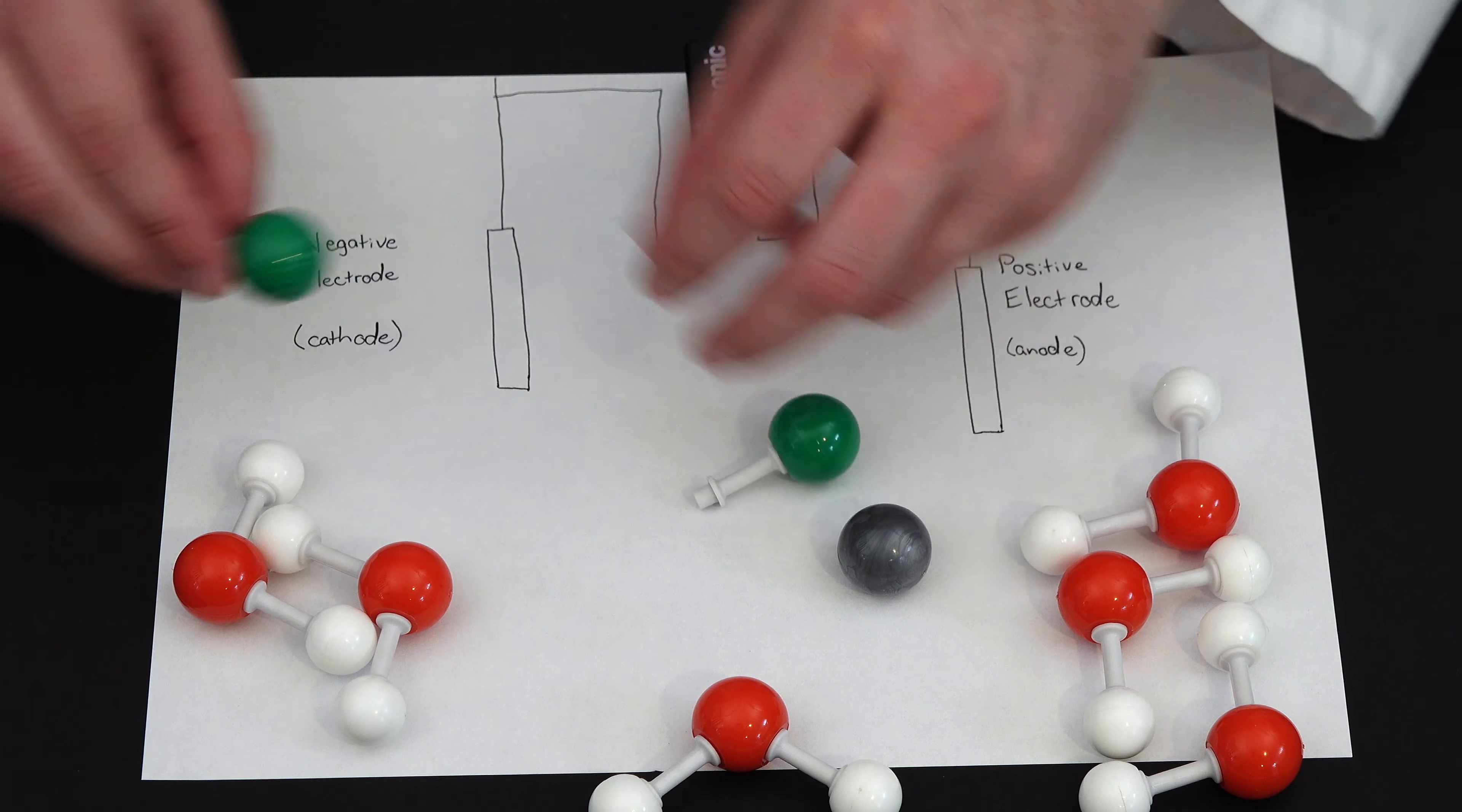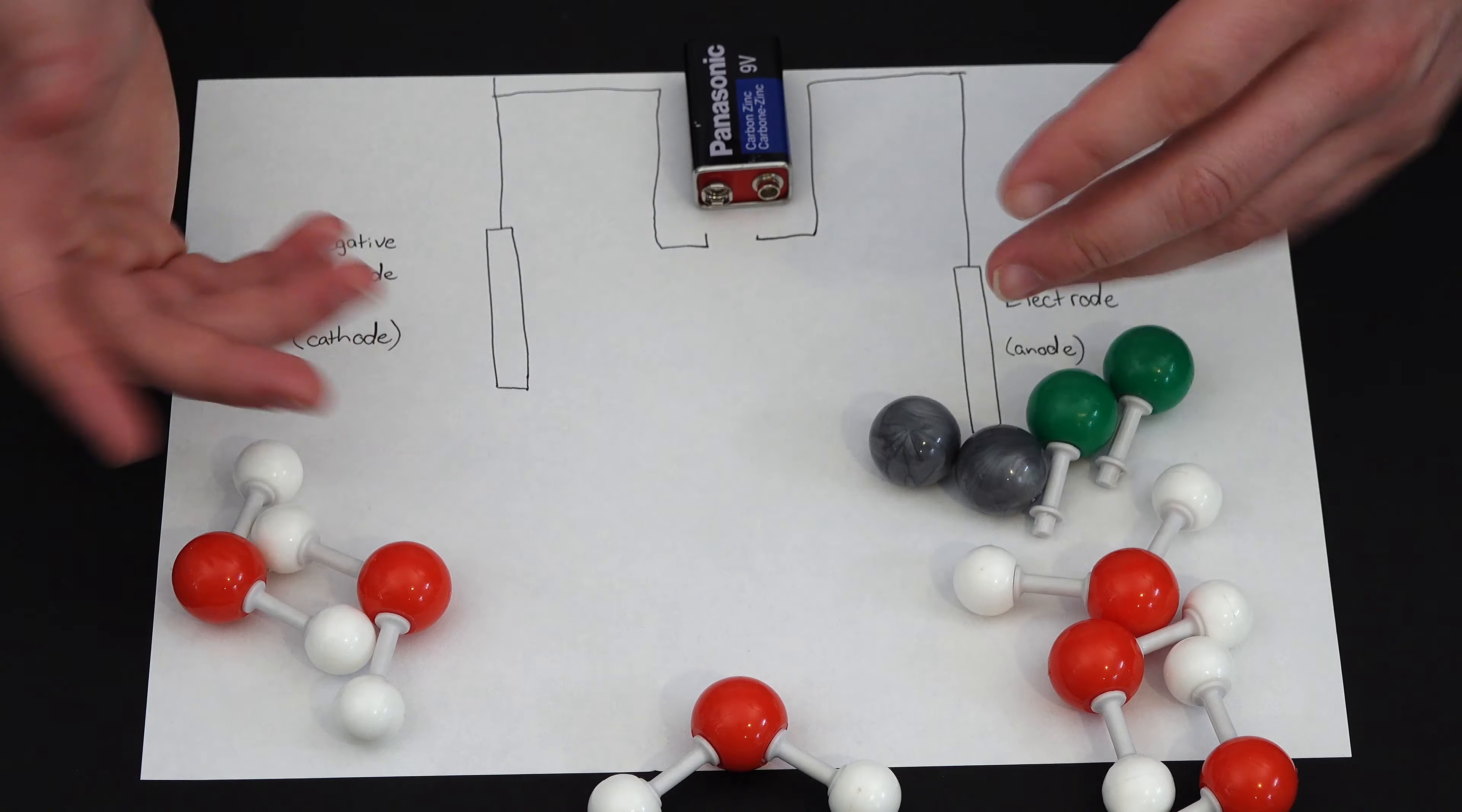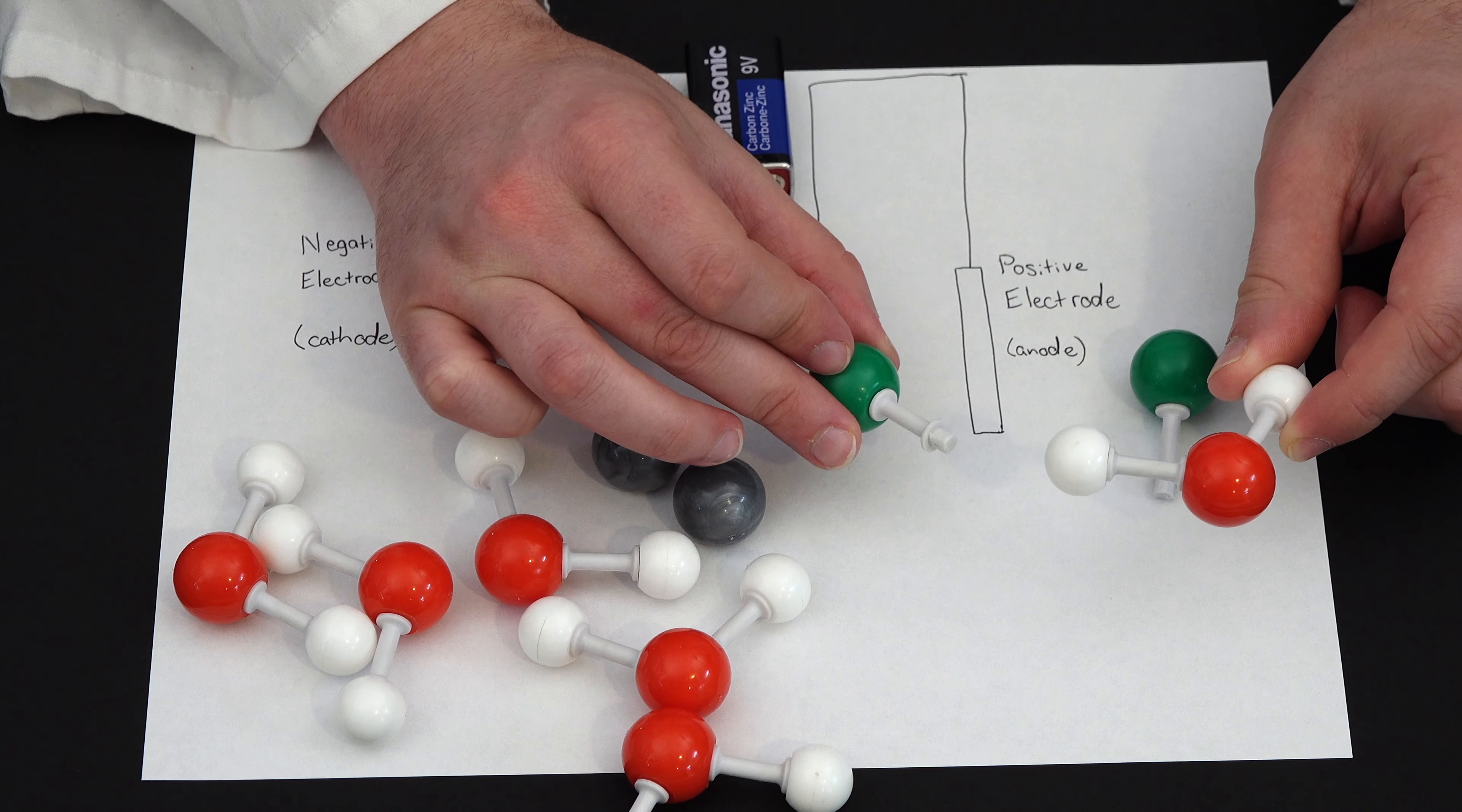Jonathan mentioned, when you have a mixture of things in your solution, what loses electrons and what gains electrons basically depends on whichever one is easiest to either give electrons to or take electrons from. So at the positive terminal, we have a choice. We can either remove electrons from water, or we can remove electrons from chloride.